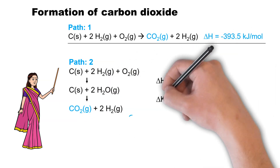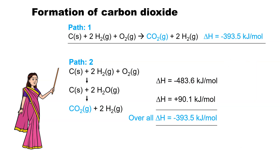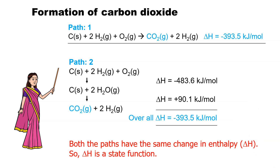Next, let's consider the same reaction in two steps, as indicated by path 2. The first step involves the formation of a water molecule from hydrogen and oxygen — both reactants and product are in the gaseous state — and this process releases energy of 483.6 kilojoule per mole. The second step involves the reaction between solid carbon and gaseous water, which absorbs energy of 90.1 kilojoule per mole. The overall reaction releases energy of 393.5 kilojoule per mole. Interestingly, no matter whether the reaction takes place in a single step or two steps, the total change in enthalpy is the same. Therefore, enthalpy is not a path-dependent quantity, but it is a state quantity.